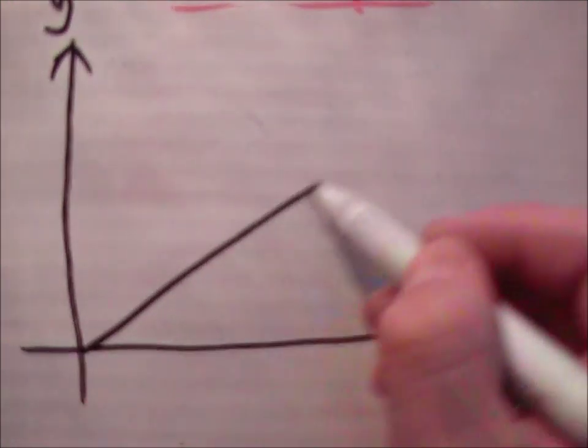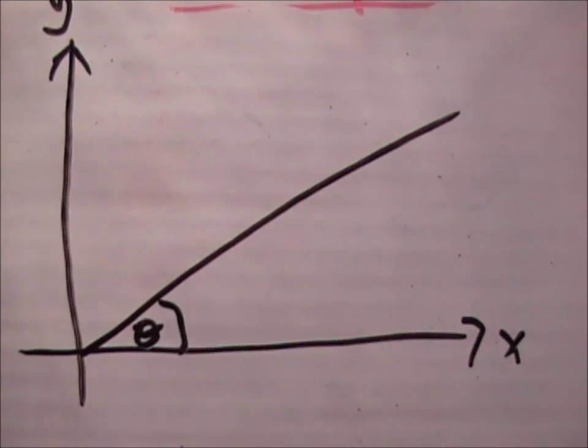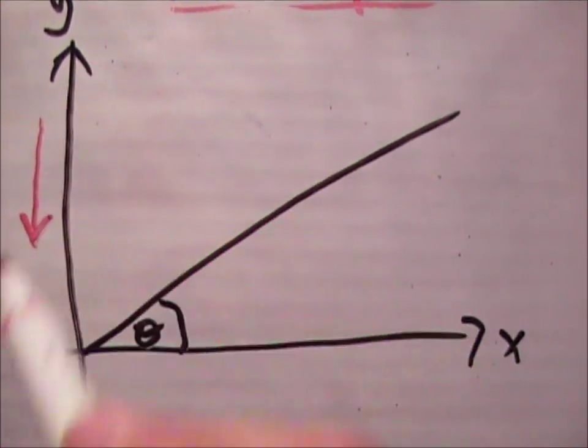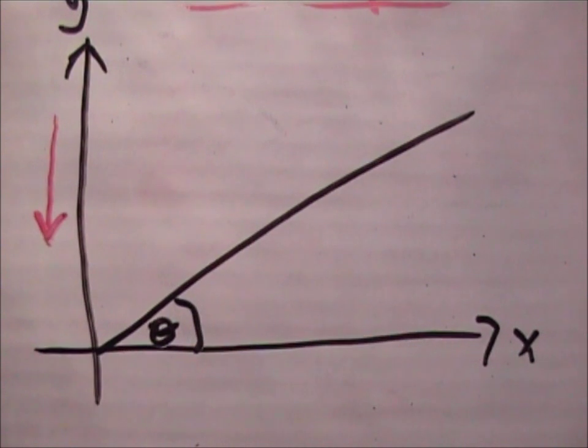And we have our incline as usual. I am going to call this at an angle theta. Now where does gravity act? Gravity acts vertically in the negative y direction or the negative j hat direction.